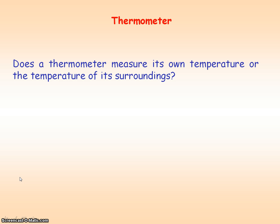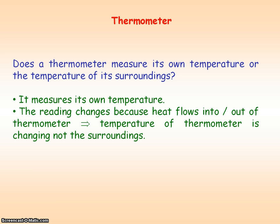Does the thermometer measure its own temperature or the temperature of its surroundings? Well, it measures its own temperature. The reading of the thermometer changes because heat is either flowing into or out of the thermometer depending upon the surroundings. So the temperature of the thermometer is changing, but not the surroundings.